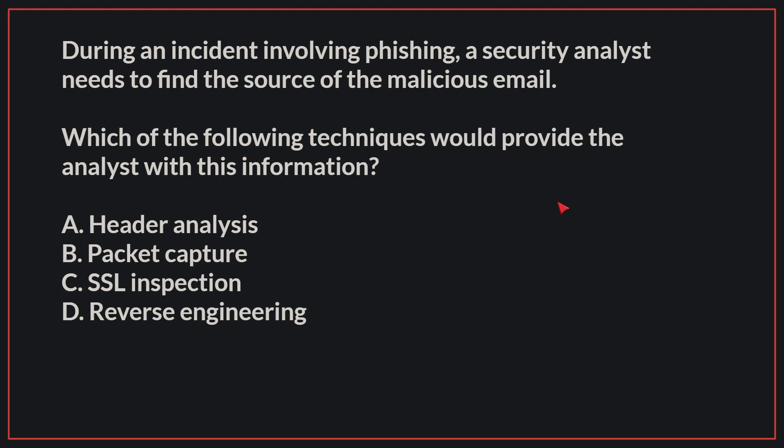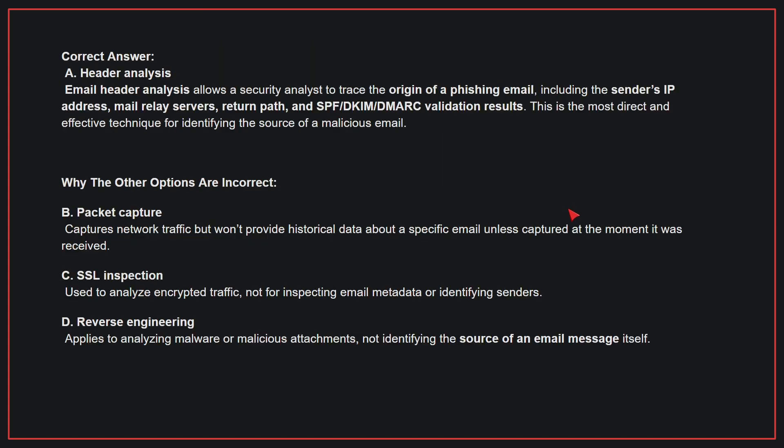The correct answer is A. Header analysis. Email header analysis allows a security analyst to track the origin of a phishing email, including the sender's IP address, mail relay servers, return path, and SPF, DKIM, DMARC validation results. This is the most direct and effective technique for identifying the source of a malicious email.